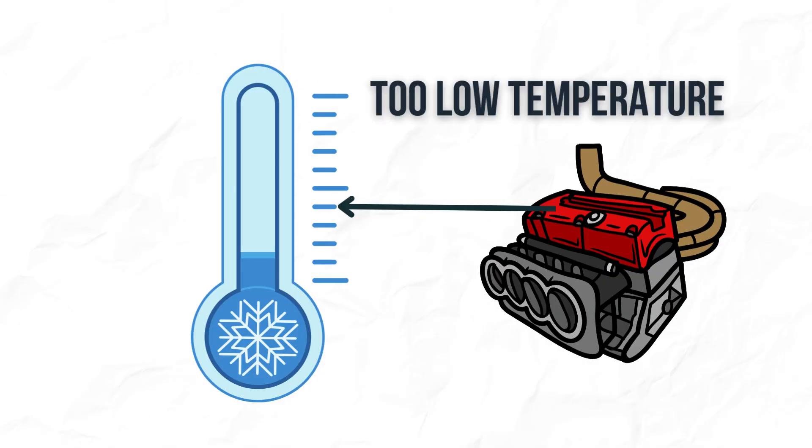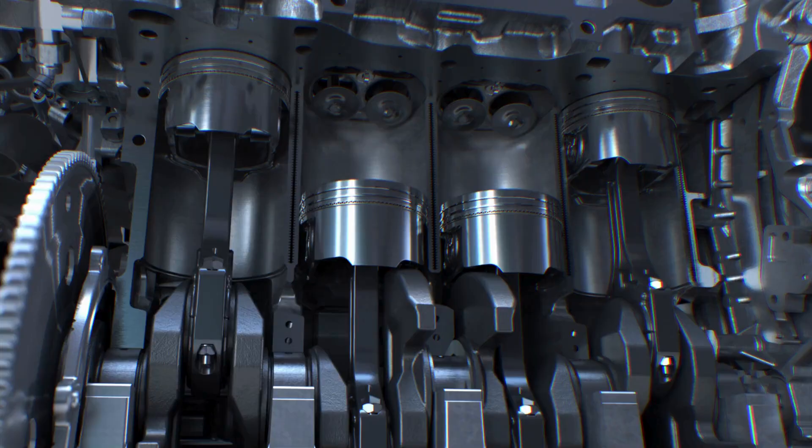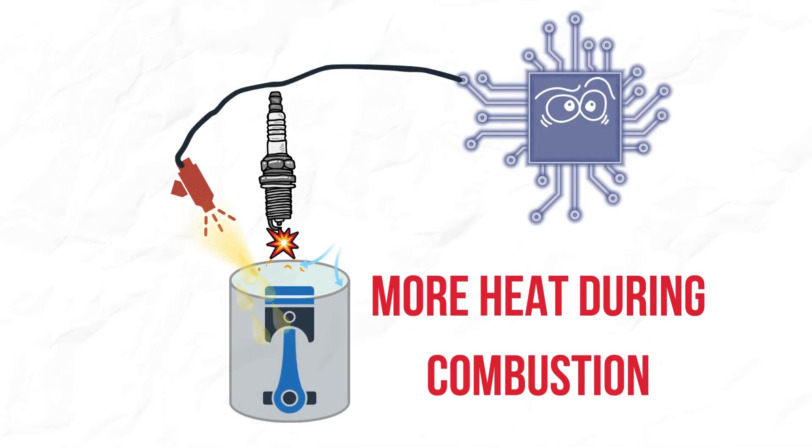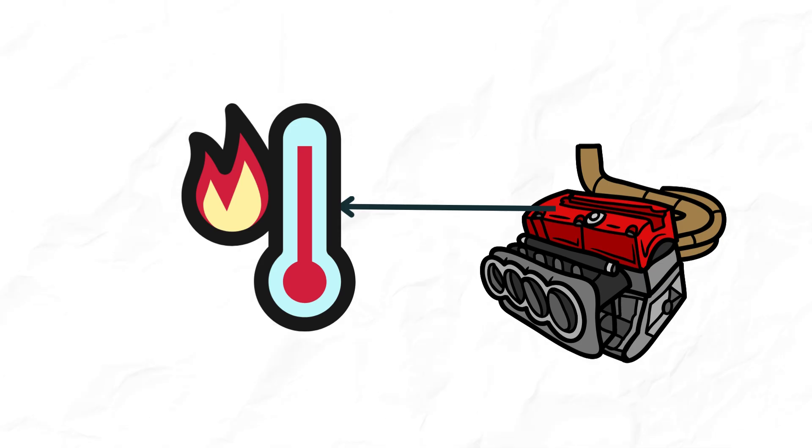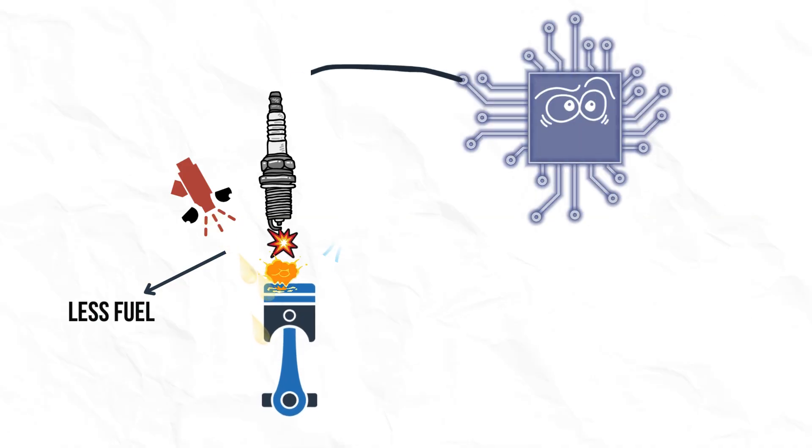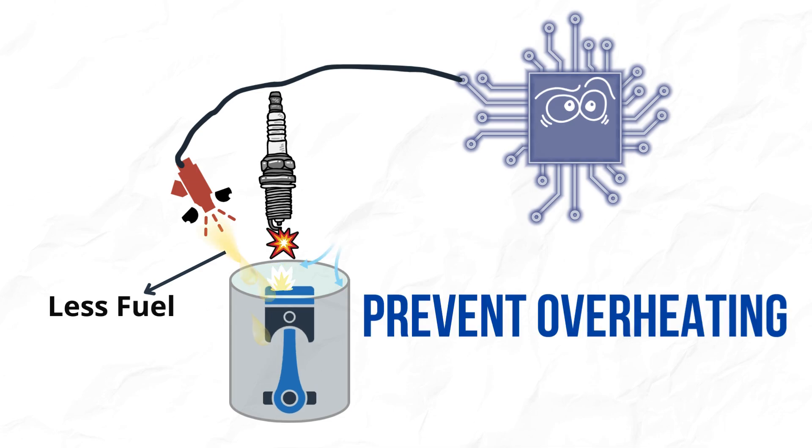This means that if the engine's temperature is too low from the desired range, the engine will run rich, and the ECU injects more fuel to produce more heat during combustion. If the engine's temperature is too high, the engine runs lean, and the ECU injects less fuel to prevent the engine from overheating.